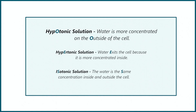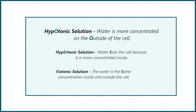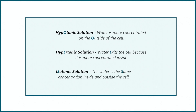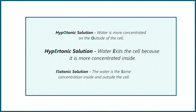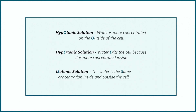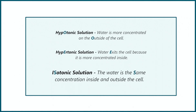You can remember: the 'o' in hypotonic reminds you the water is more concentrated on the outside of the cell compared to the inside. The 'e' in hypertonic reminds you the water exits the cell and so must have been more concentrated on the inside. And the 's' in isotonic reminds you there is the same concentration on the inside and outside of the cell.